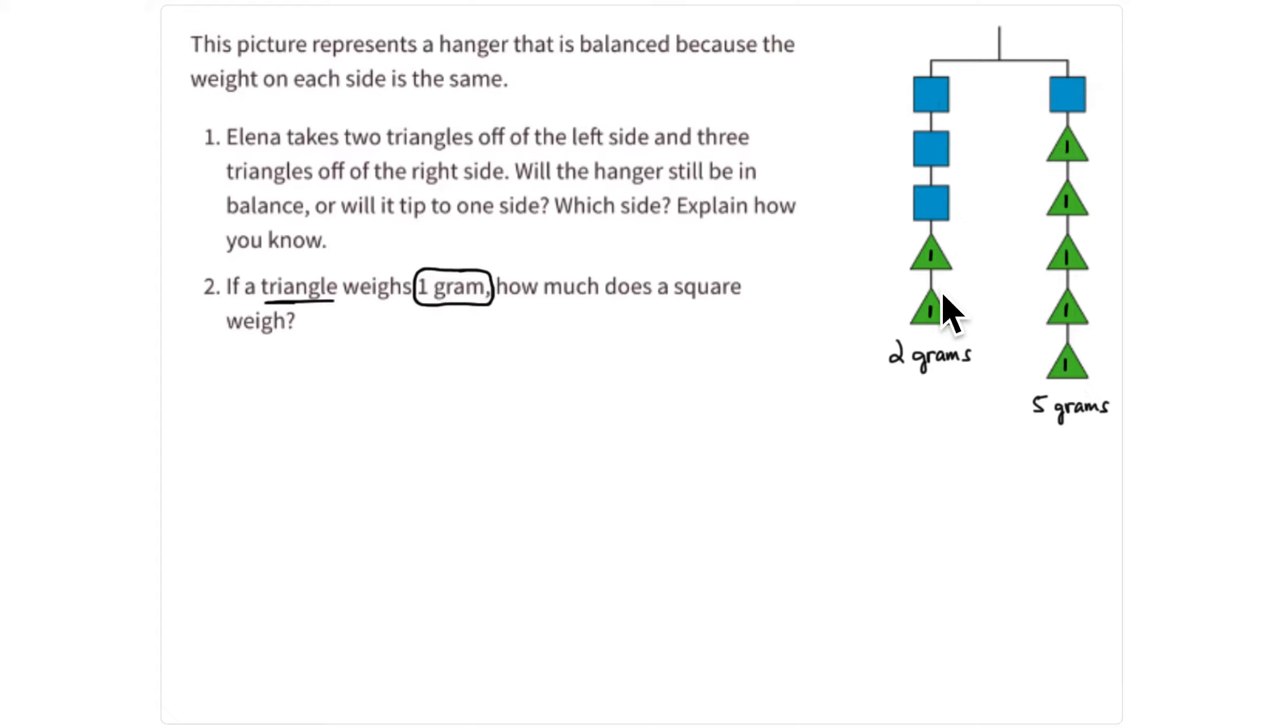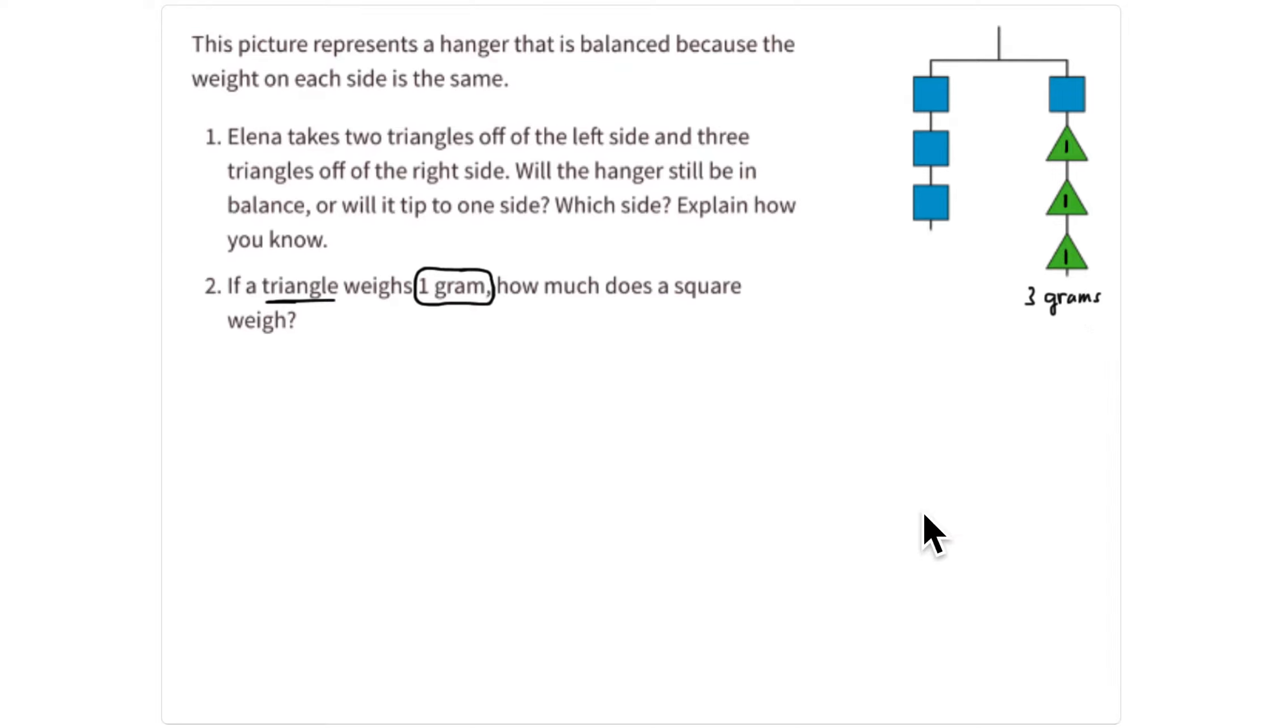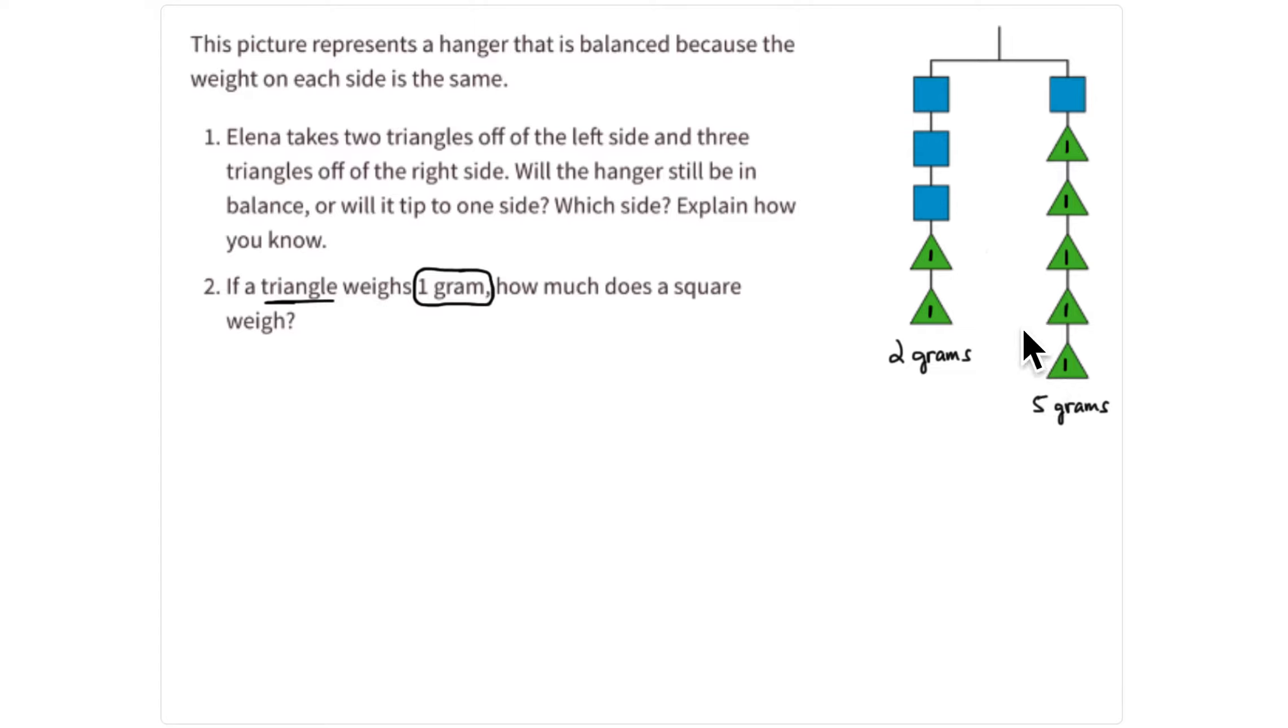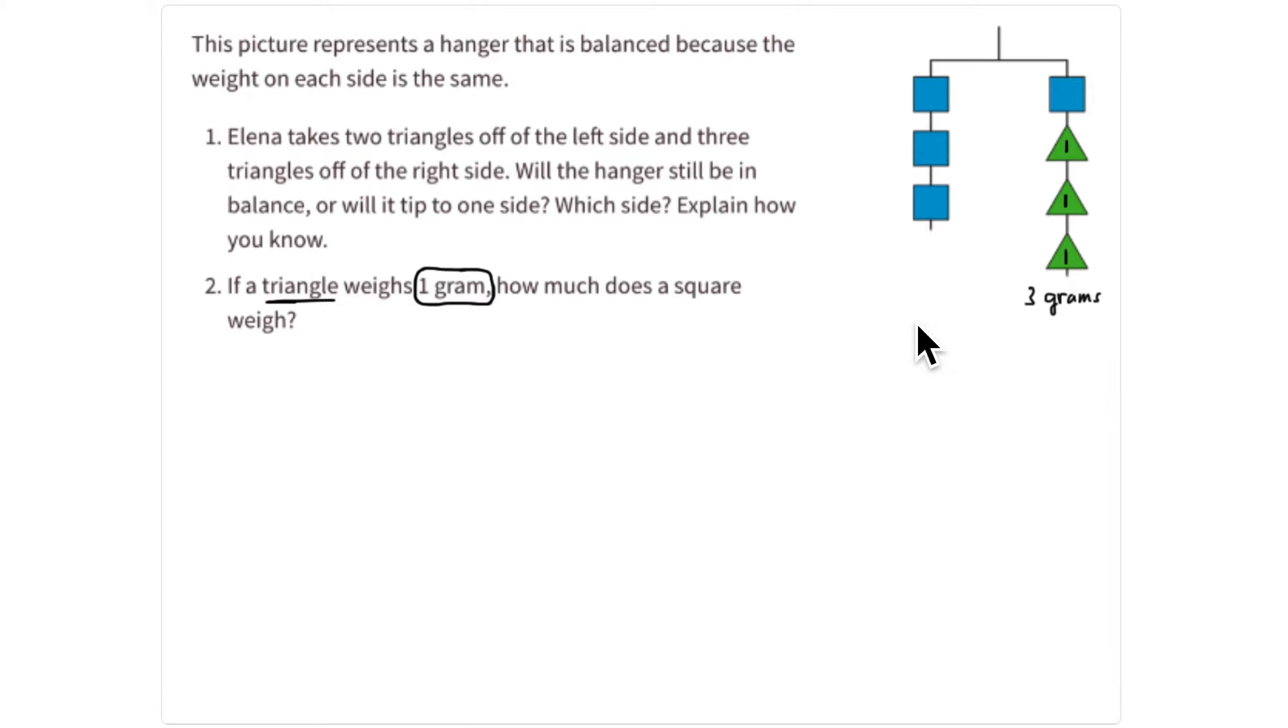And so what we can start to do is make these sides of the hanger simpler, fewer blocks, until we can get down to what one blue block equals. So if we remove two triangles from the left side and remove two triangles from the right side, now we have equivalent amounts of weight on each side. We've just removed the same amount from both sides, so we've made this a little bit simpler.